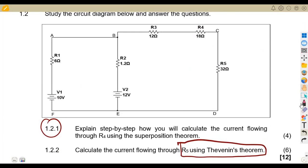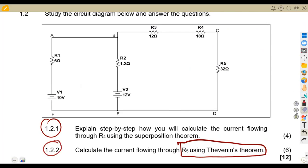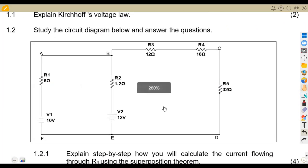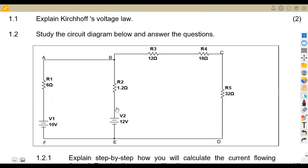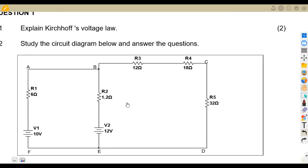Why am I considering this question on Thevenin after the videos we have done on Thevenin? It's because we had a calculation — I think it was the February 2022 exam paper — where we had a similar consideration of two voltage sources and I explained it in another way. Maybe you didn't understand that way, so I'm going to explain from this question. We are asked to calculate the current flowing through R5 using Thevenin's theorem.